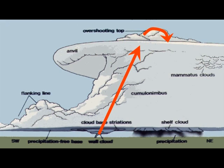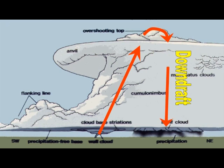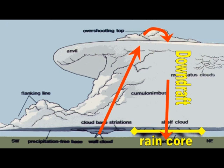Now we get the downdraft portion of the supercell, which is to the right in this image — the northeast side of the classic supercell. This is the rain-cooled air descending throughout the layers of the atmosphere. Down at the ground, this is where we would be getting our heavy rain and/or hail falling beneath the downdraft. What really helps the supercell maintain itself is that the updraft and the downdraft are separate, with the warm moist air rising into the updraft and the cool rain-cooled air in the downdraft kept apart from it.